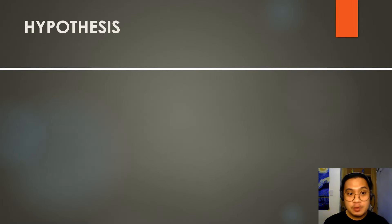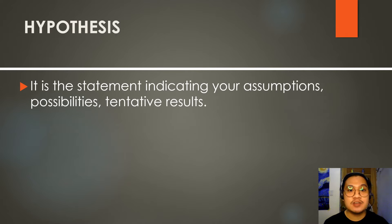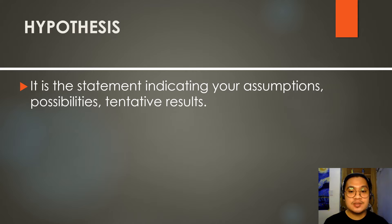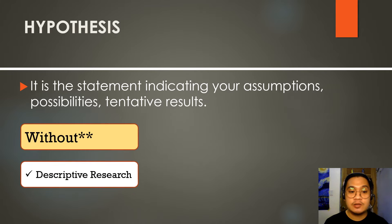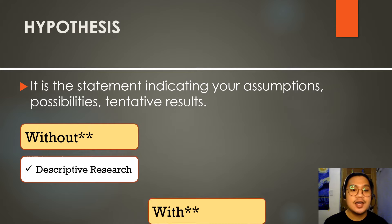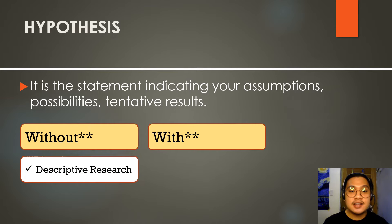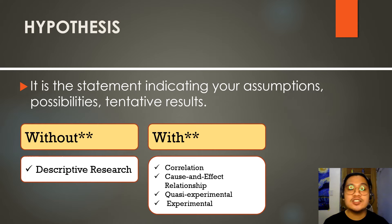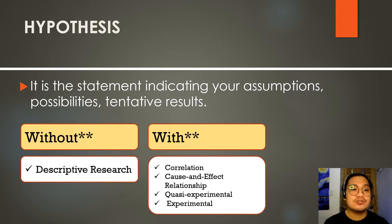The next component of the research paper is the hypothesis. Hypothesis is a statement indicating your assumption, possibilities, and tentative results. Remember that not all research papers have a hypothesis. Research papers without hypotheses are descriptive research. Those with hypotheses are under correlation, cause and effect relationship, quasi-experimental, and experimental research. Therefore, when writing your research paper, you should know what type you are doing so you also know when to write a hypothesis.